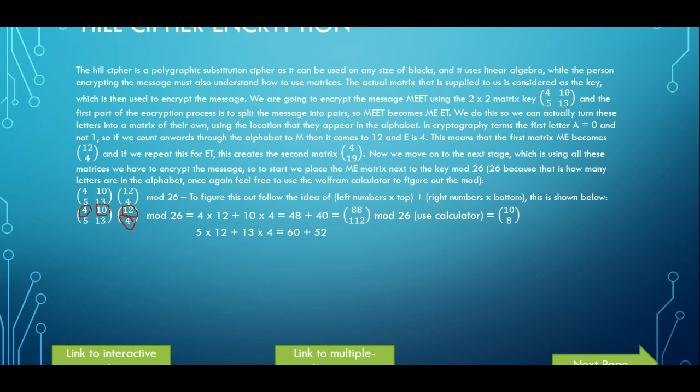We then do the same process for the bottom two. So 5 times the top number which is 12 and 13 times the bottom number which is 4. So 5 times 12 is 60, 13 times 4 is 52, 60 plus 52 is 112. So this gives us this matrix here which is 88 and 112. And we modulus that with 26 and once again you need to calculate it because it would be very difficult to figure it out without it. And that gives you 10 and 8, so that is ME, the first part of our message encrypted.